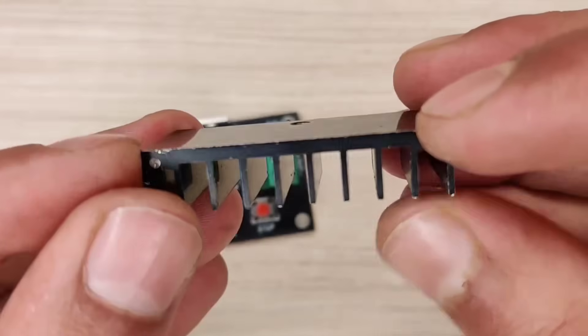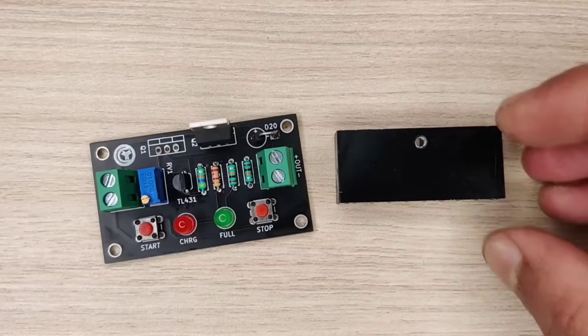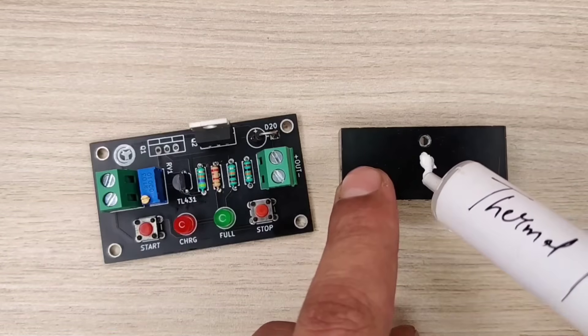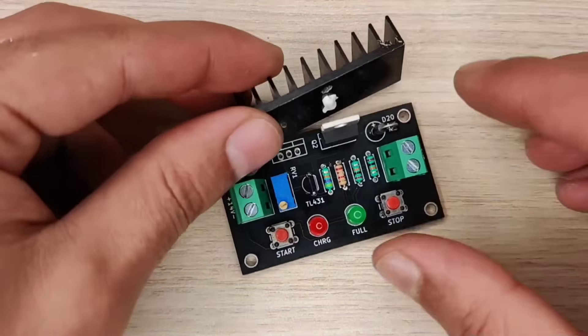A small heatsink must be used for the MOSFET. Add little thermal paste for effective heat dissipation from MOSFET. And screw heatsink at its place.